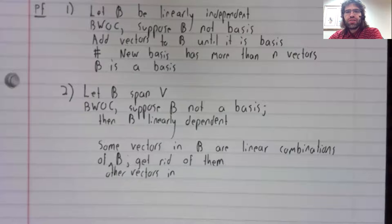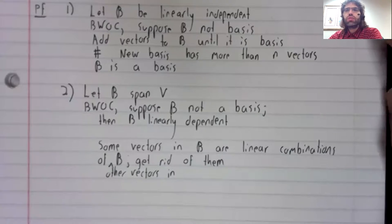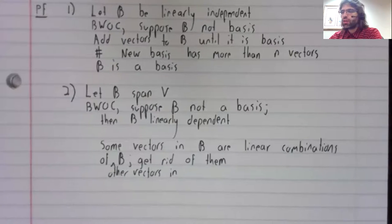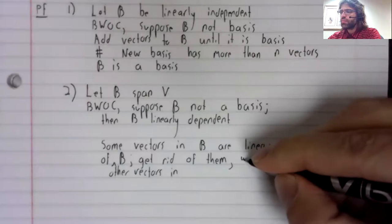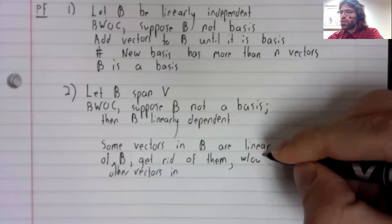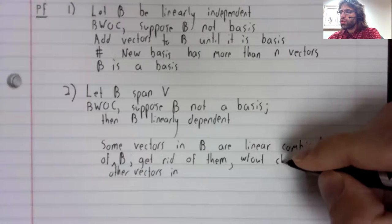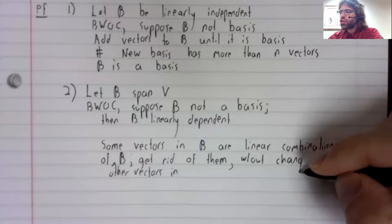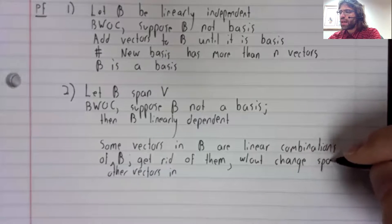And a previous theorem says that if you get rid of these linear combinations, we don't change the span.